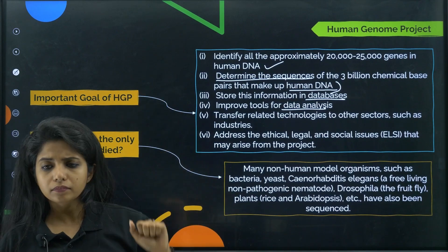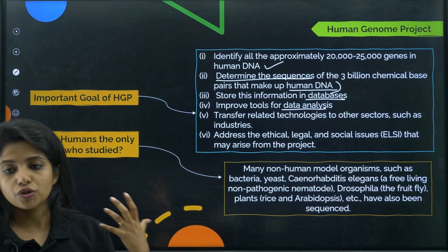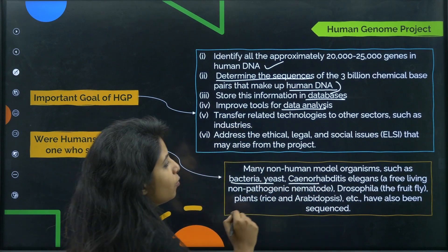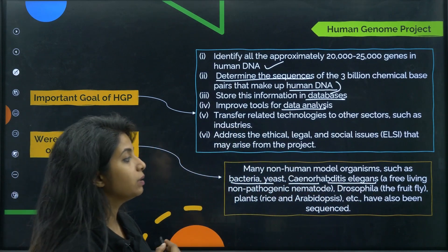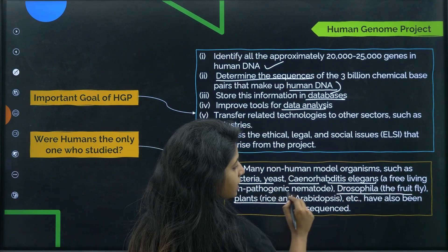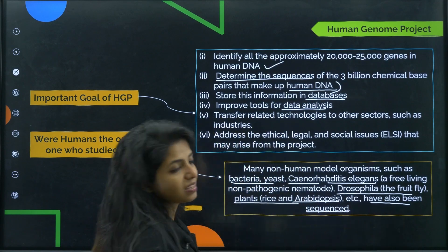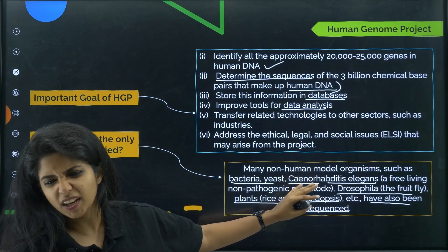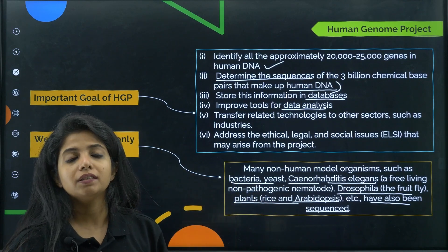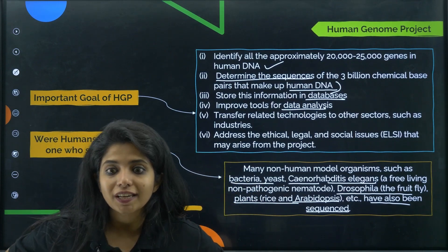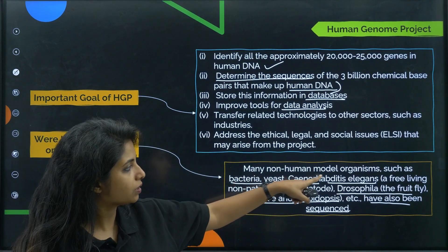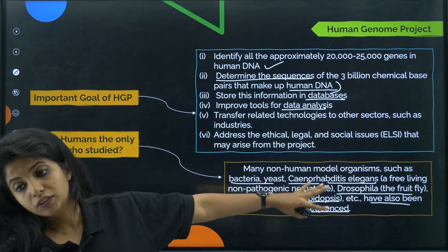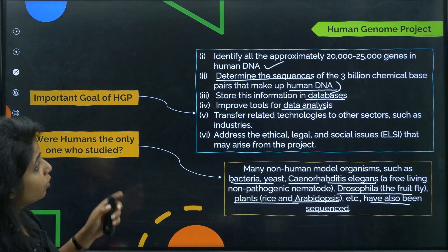Humans were not the only ones studied. Many non-human model organisms were also sequenced, including bacteria, yeast, Caenorhabditis elegans (a free-living non-pathogenic nematode, i.e., a roundworm), Drosophila (the fruit fly), and plants like rice and Arabidopsis.